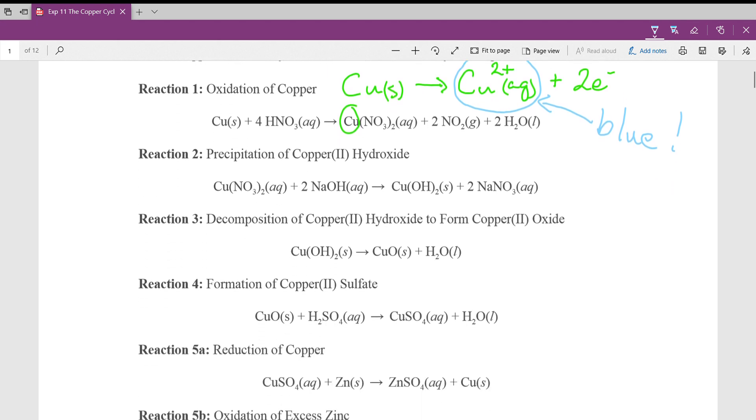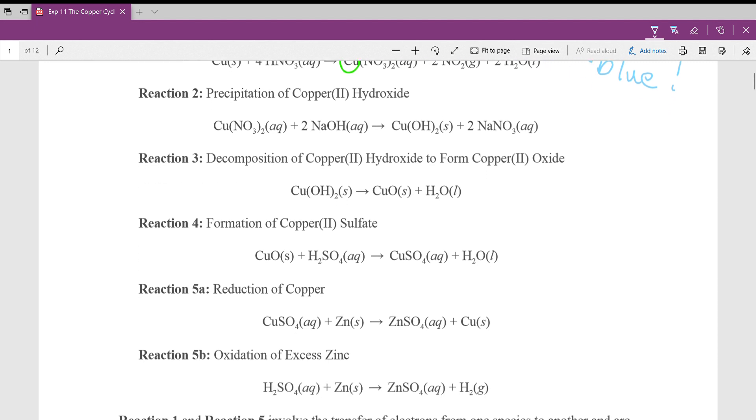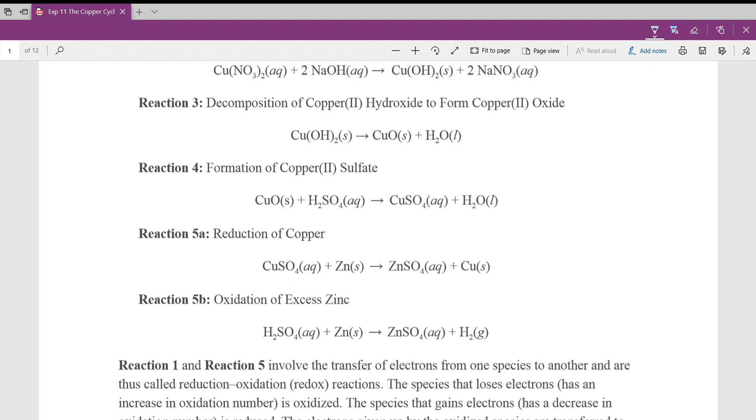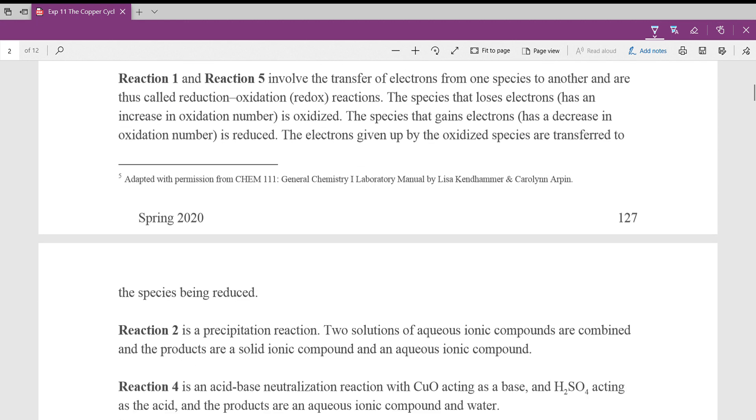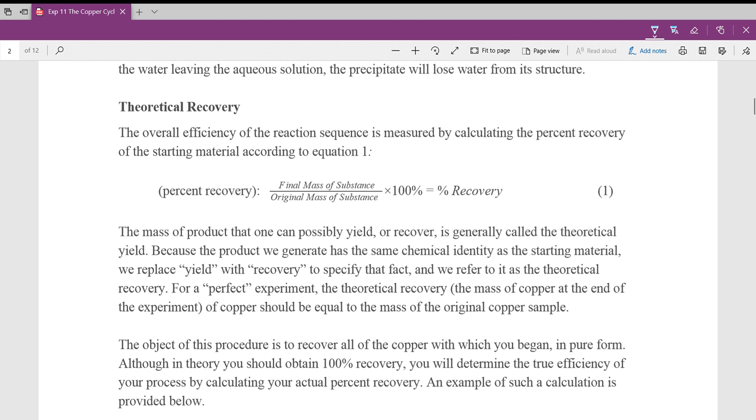The next reaction, precipitation of Cu(OH)2, pretty straightforward precipitation reaction. You'll need to do the net ionic equation for that, and pick out the spectator ions. If you don't remember how to do that, shoot me an email. Let's see, for the most part, these are fairly straightforward. Step five, there are two reactions concurrent, and I'll talk about those in a second. So go ahead and read through all this stuff. I do want to point out this equation here, percent recovery.